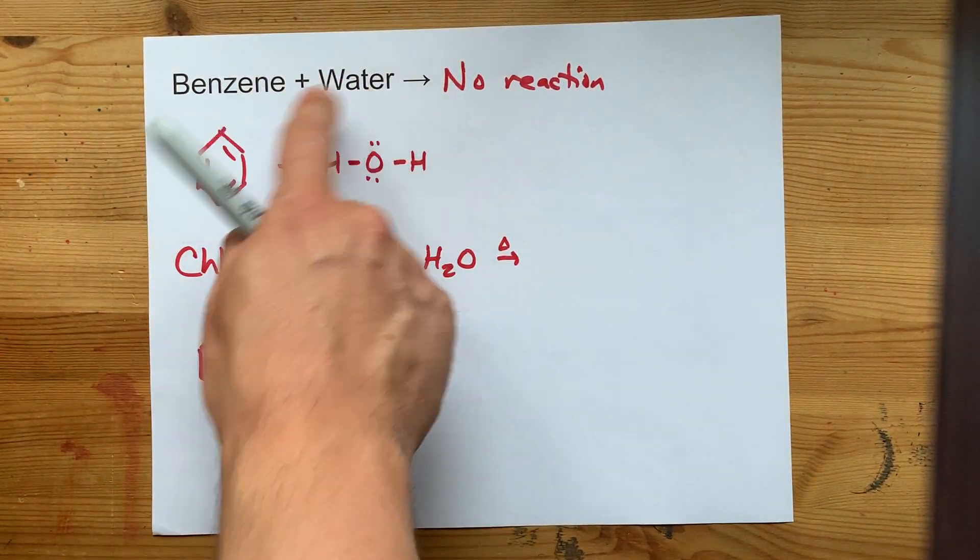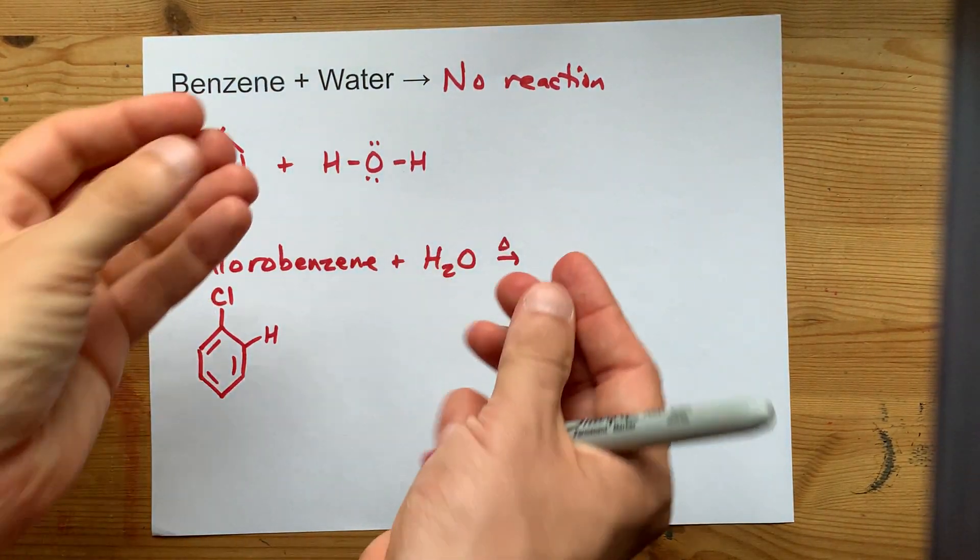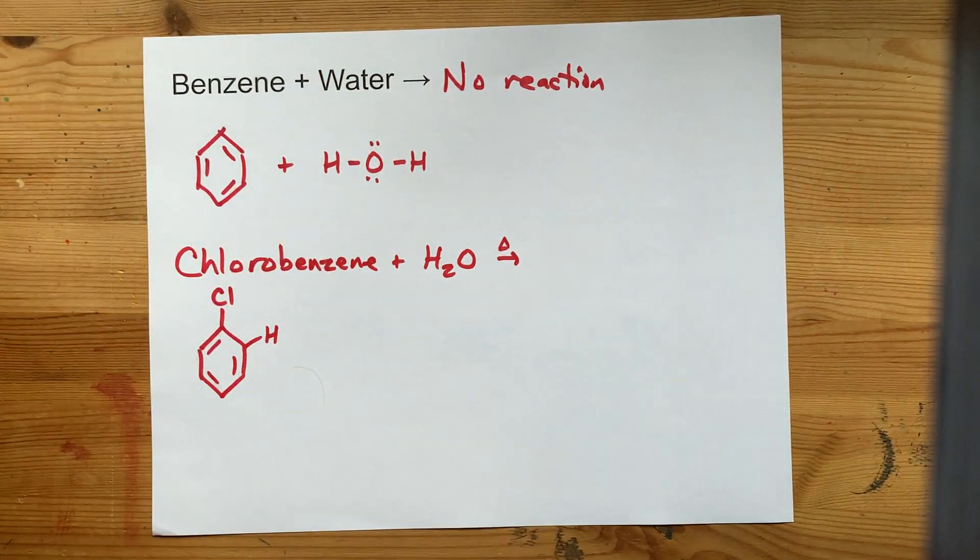So benzene and water together, no. In fact, these don't even mix. One's non-polar, one's polar. So if you mix them together in a test tube, you're just going to see one sitting on top of the other.